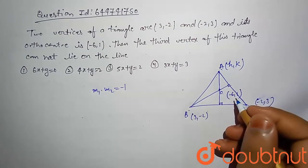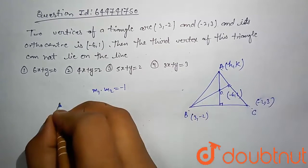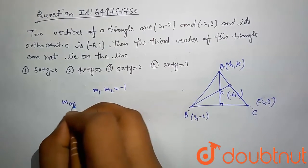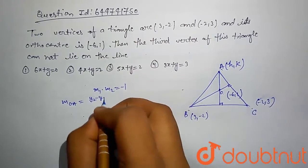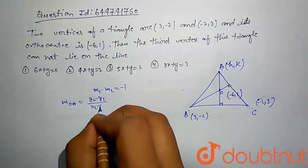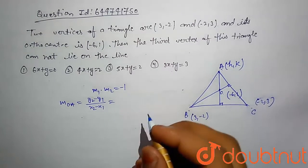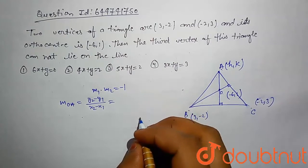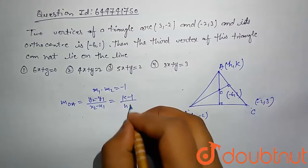Then first we have to compute AO slope, which is, we know the formula (y2 - y1) divided by (x2 - x1). Just apply this formula, then this comes out (k - 1) divided by (h + 6).